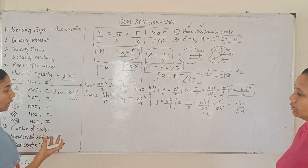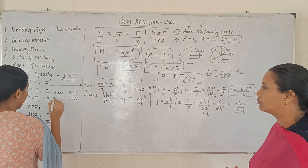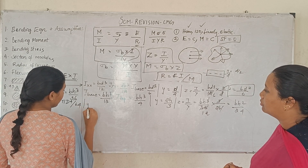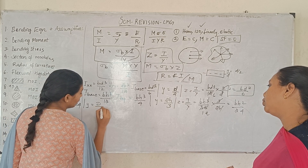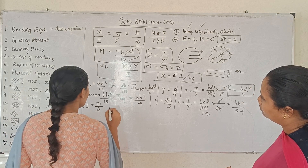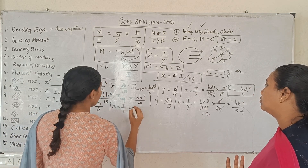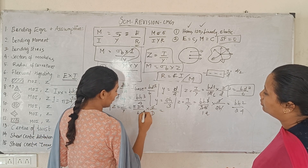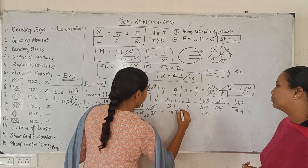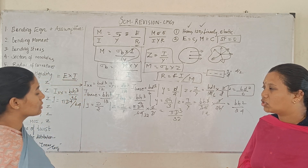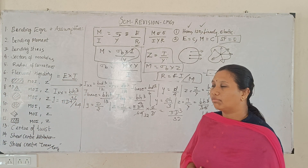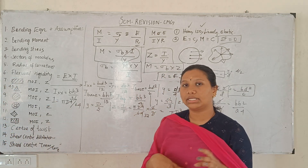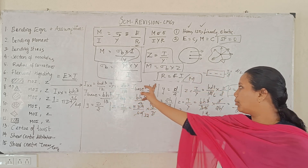Next is solid circle. Moment of inertia for a solid circle: I equals π·d⁴ divided by 64. The x-axis equals y-axis for a circle, so I_x equals I_y equals π·d⁴ divided by 64. Distance y equals d by 2. Section modulus for solid circle equals π·d³ divided by 32.